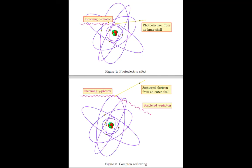Once we've talked about the interaction, we have to talk about what type of interactions we generate in tissue. We have coherent scatter, photoelectric, Compton, pair production, and photonuclear disintegration. Of all those, the ones illustrated here — the photoelectric effect and Compton scatter — are going to be the most important.